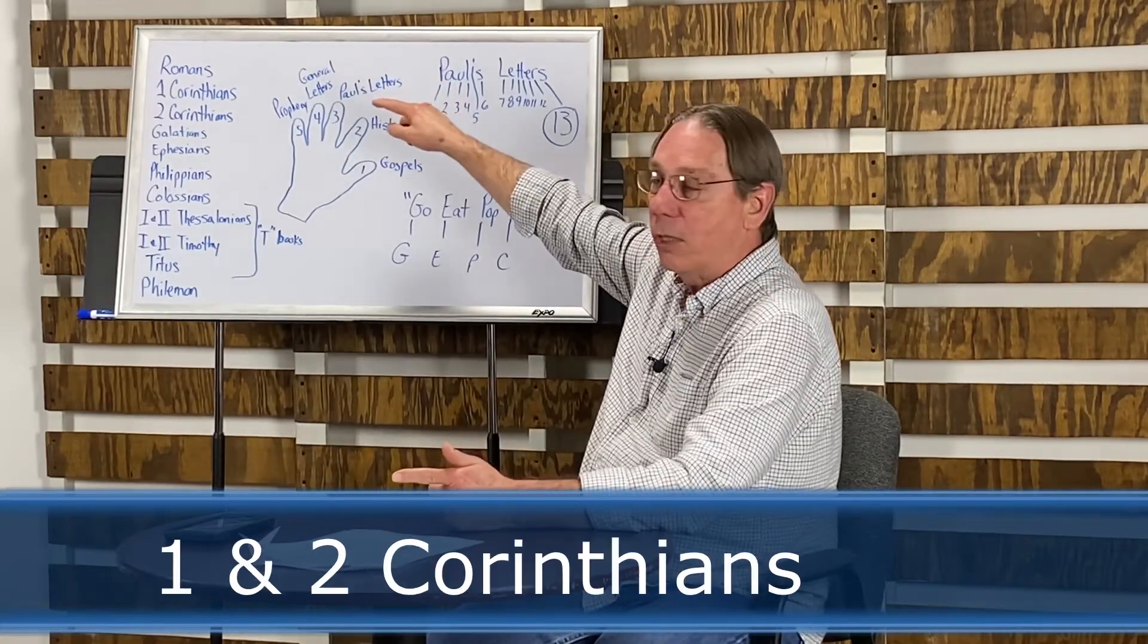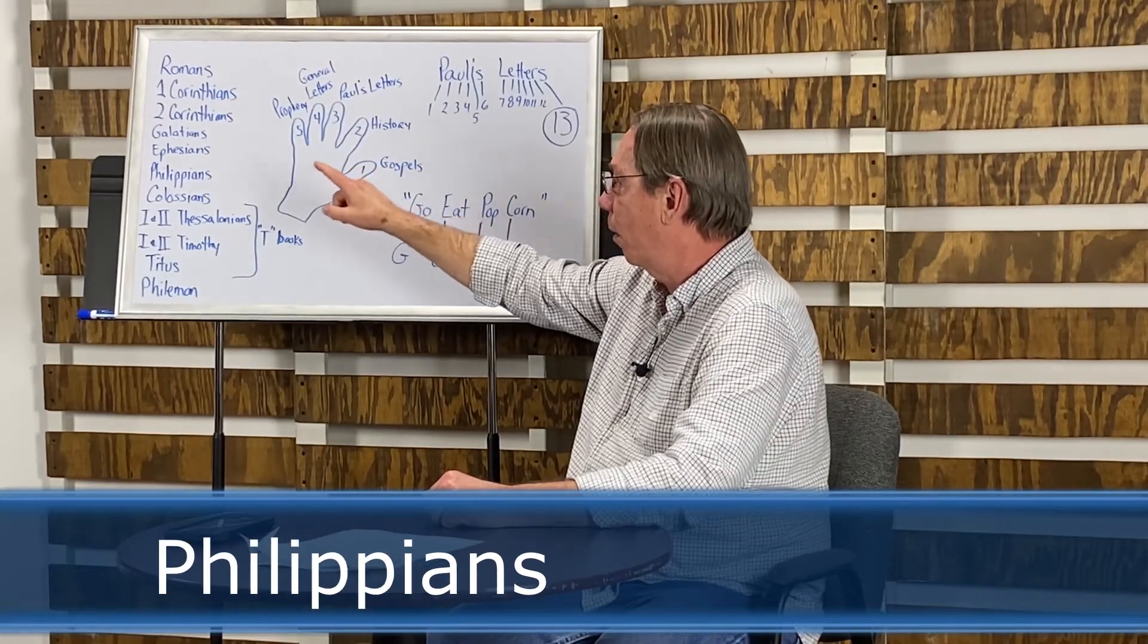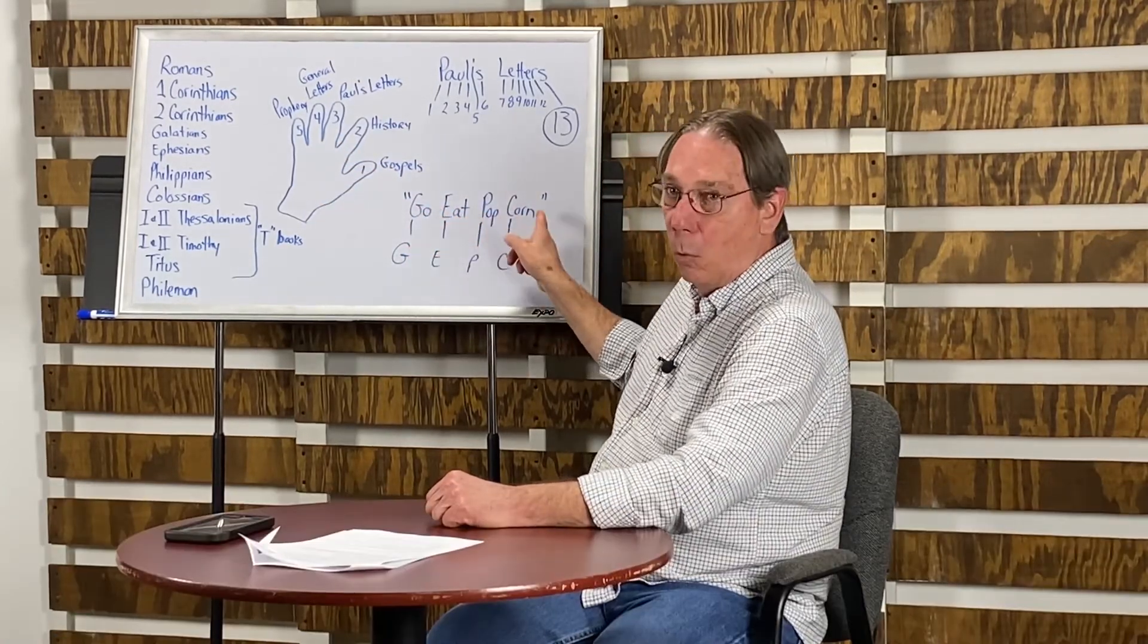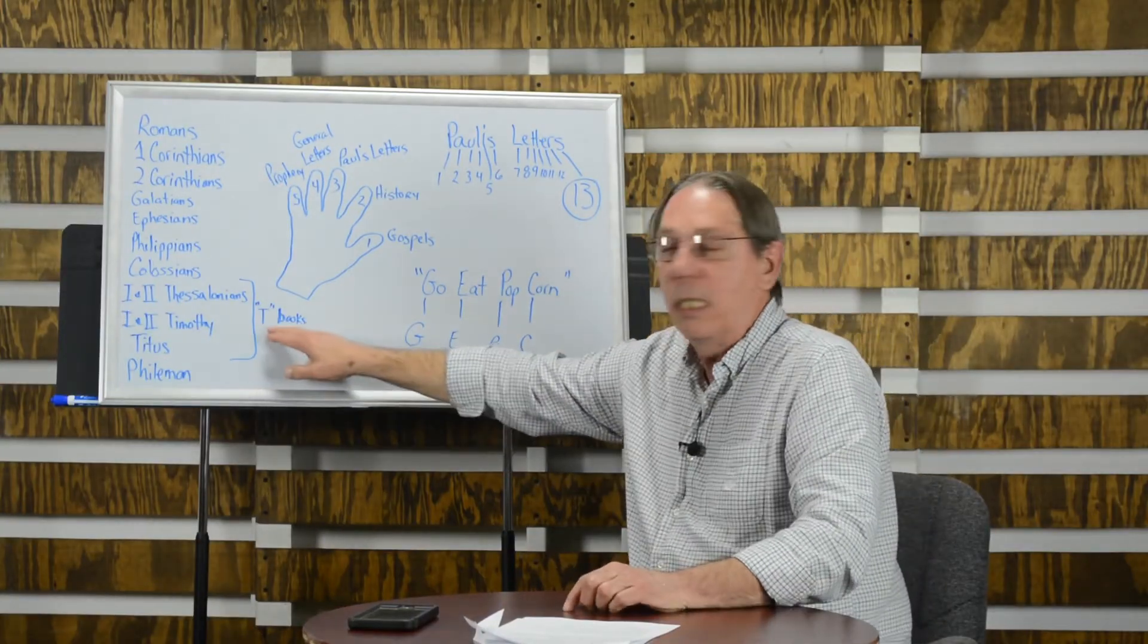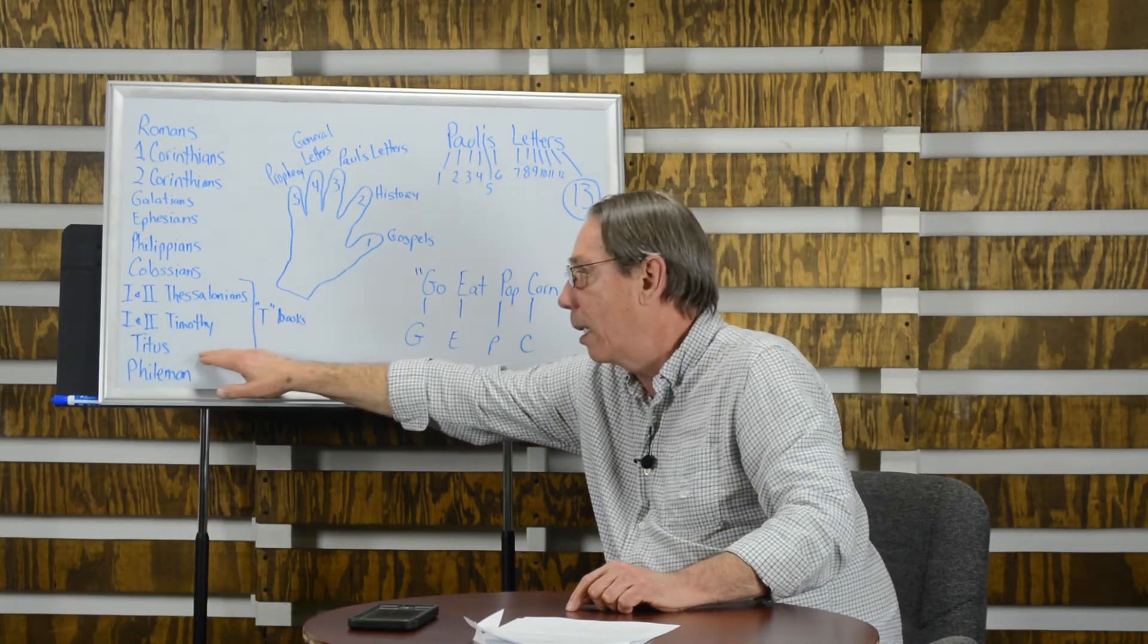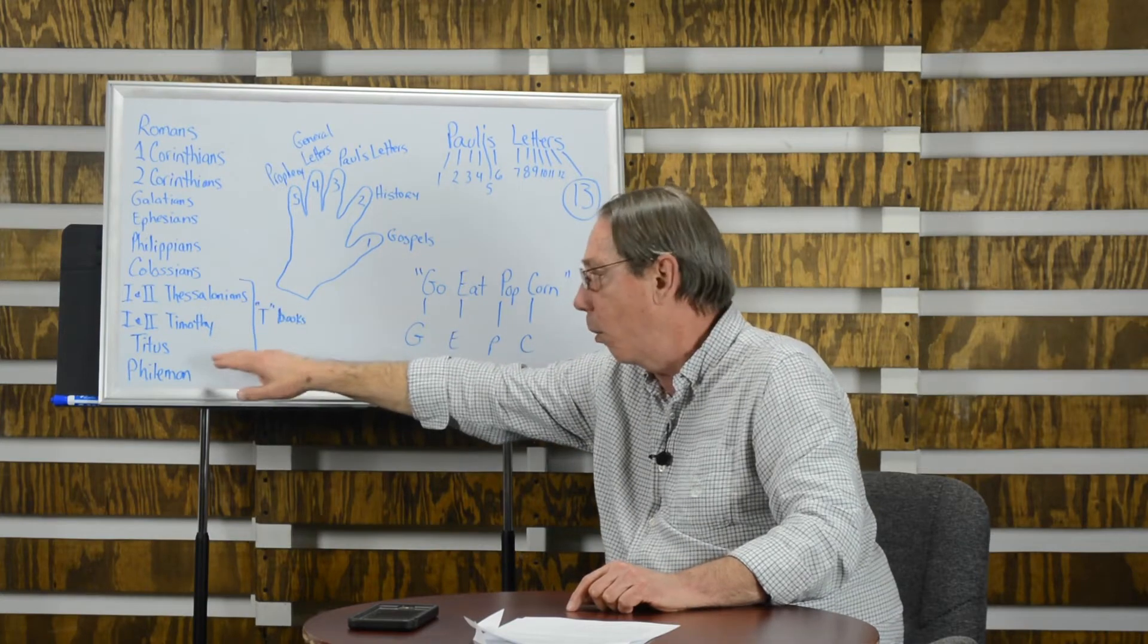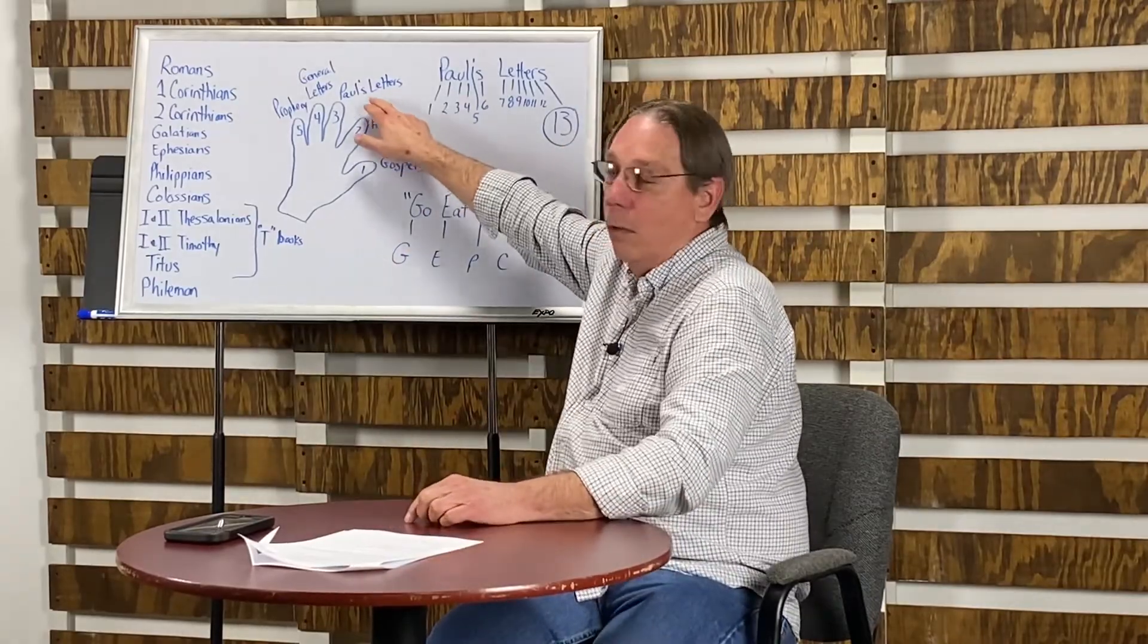Romans, first and second Corinthians, Galatians, Ephesians, Philippians, Colossians. Go eat popcorn. Now we come to what I'm going to call the T books. That's going to be Thessalonians, Timothy, and Titus. If you'll look, they're in alphabetical order. All we need to remember is the T books. So then we have first and second Thessalonians, first and second Timothy, Titus, and then Philemon rounds out the 13 books of the division called Paul's letters.